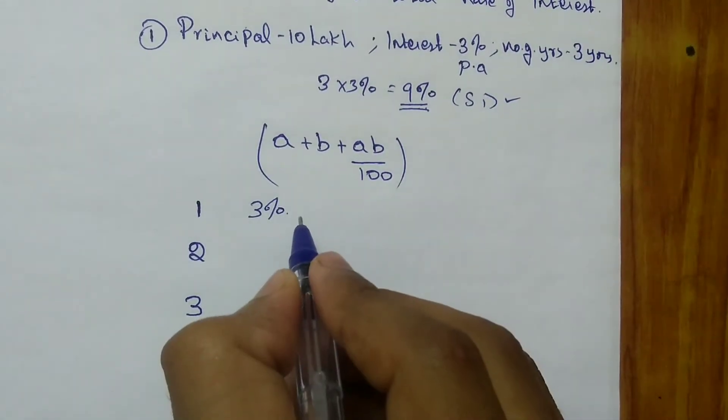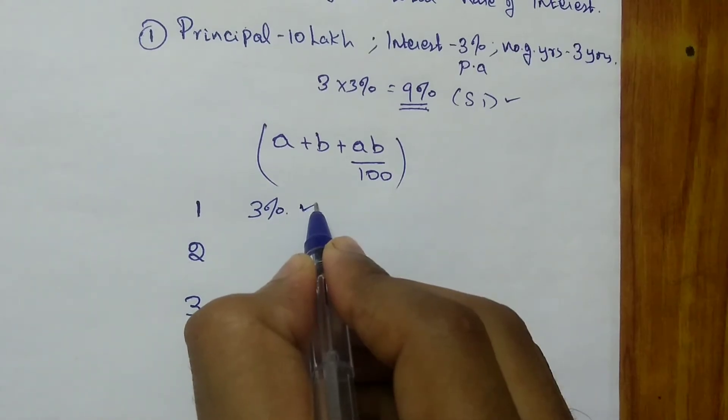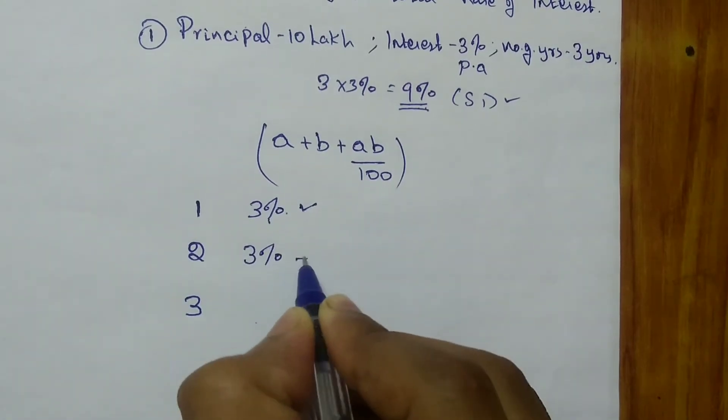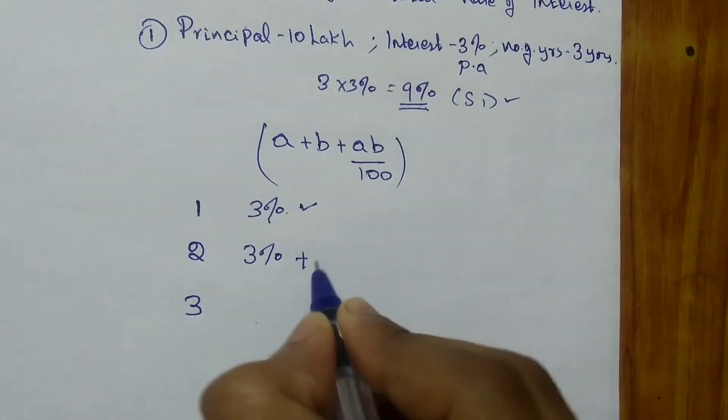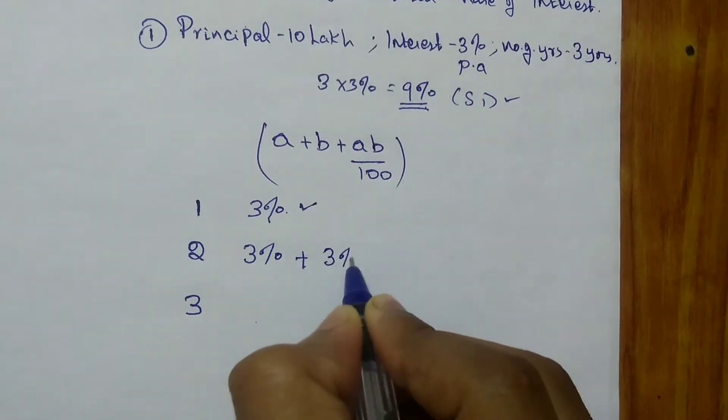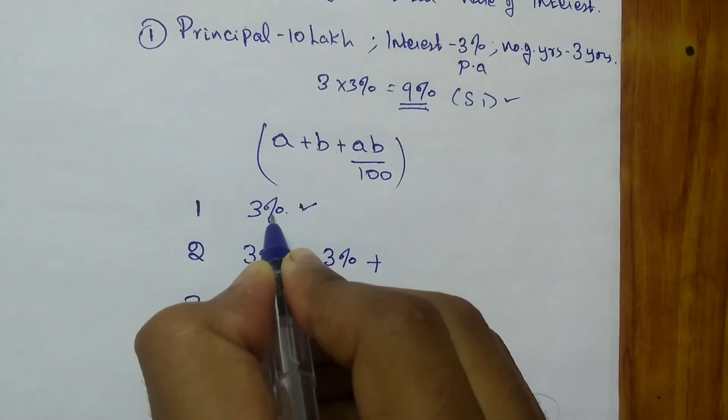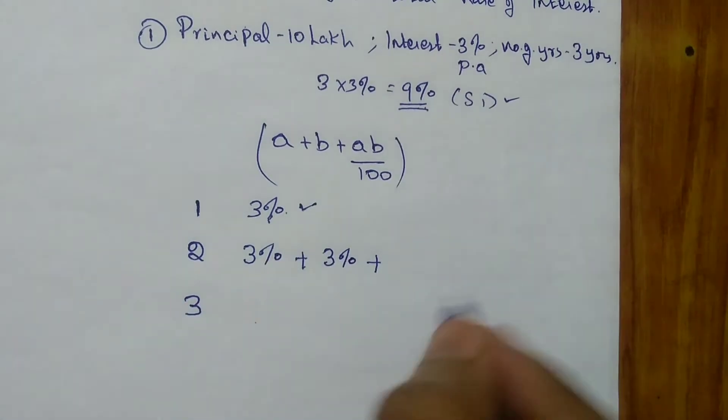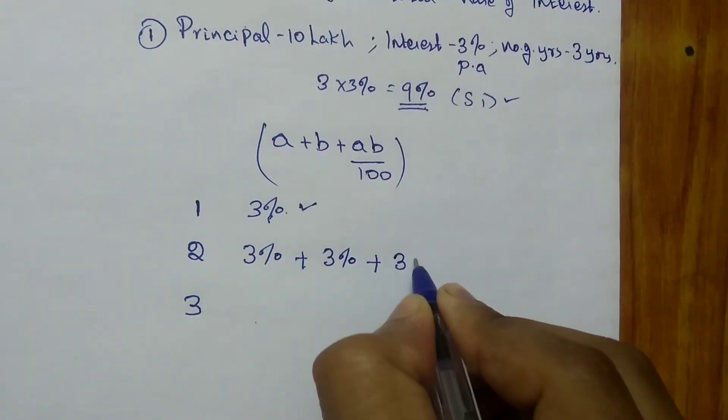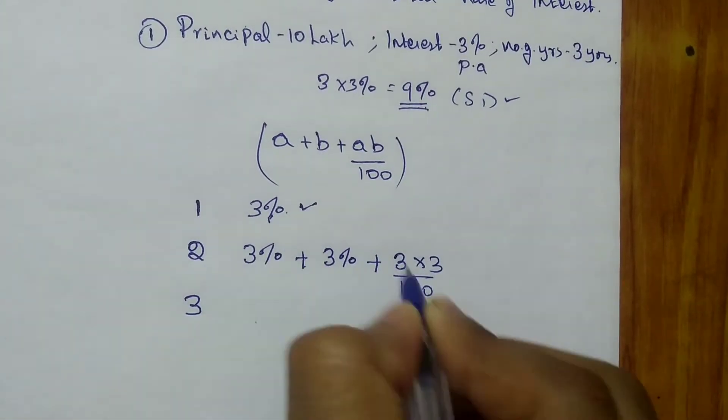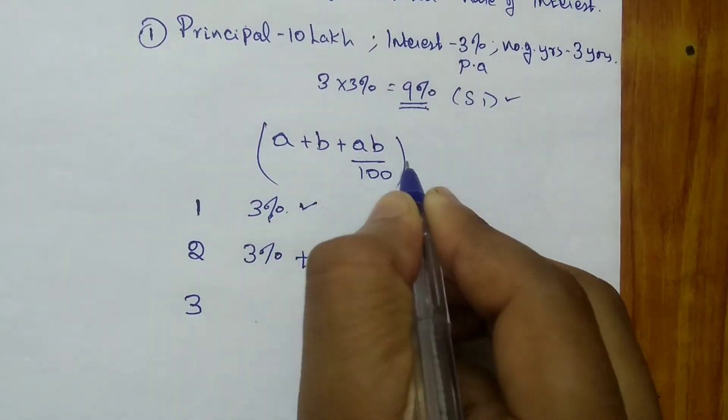Now you haven't paid this 3%. Moving to second year, you have to pay the first year 3%, plus second year also you will get another 3%, plus for the previous year 3% pending amount, you have to pay another 3%. So 3 times 3 by 100.